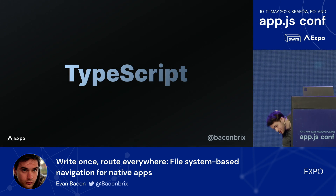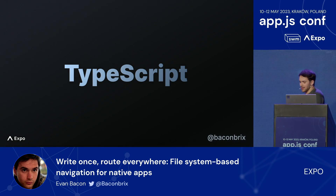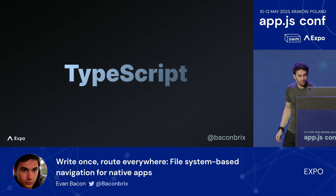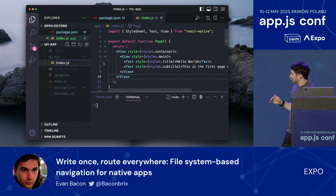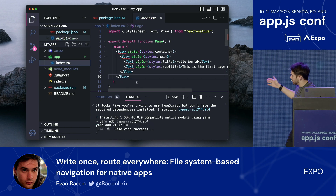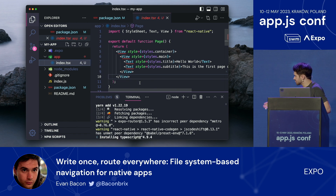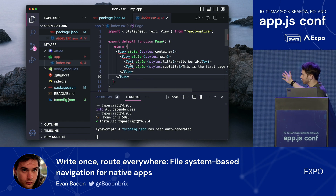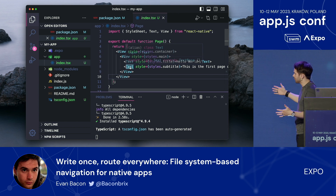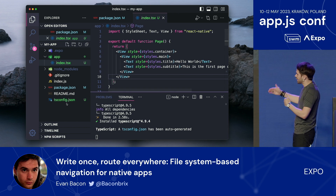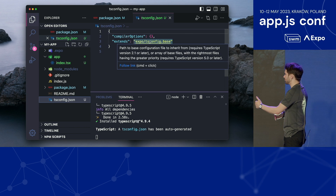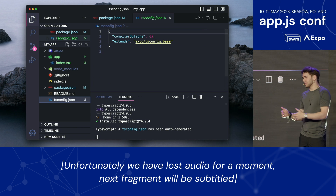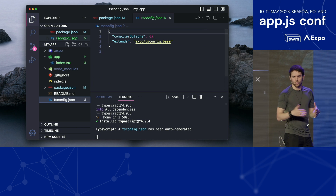Expo Router doesn't just help with navigation — it's also really good for TypeScript. Expo CLI already has pretty awesome TypeScript support. But starting now, if at any point during development you add TypeScript code, Expo CLI will automatically install all the TypeScript dependencies that you need. It will set up the TS config, and it will also augment the React Native types so that they support web.